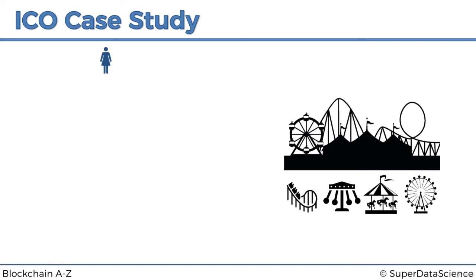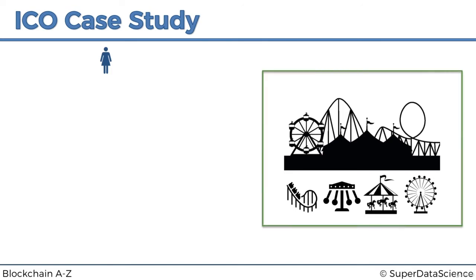She's got a whole case study about this and she's written a white paper — we'll talk about white papers in a separate tutorial. She's ready to get things going, but she needs funds. She needs to raise some capital in order to buy the land, organize everything, get all the permits and licenses, and get things underway. So what she decides to do is launch an ICO.